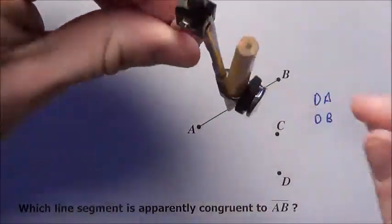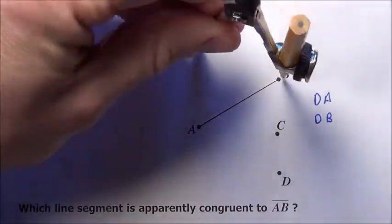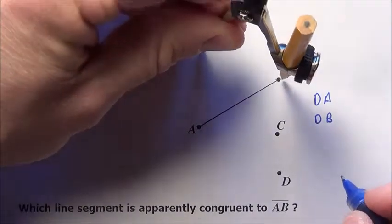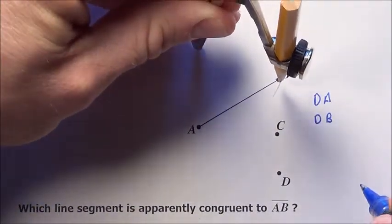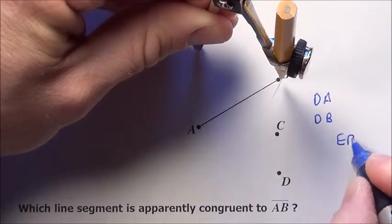What about E? Is that E to one back to one of those points? E to B would also look like it's a solution. Nah, it's a little off. E to B is a little off. It could be. We'll consider it if it's one of the options.